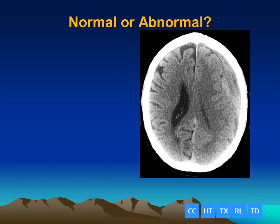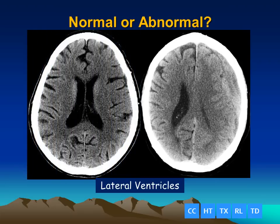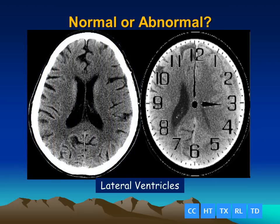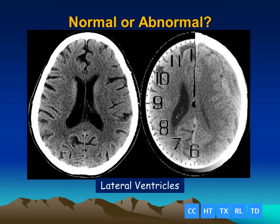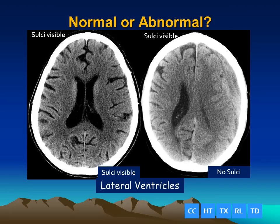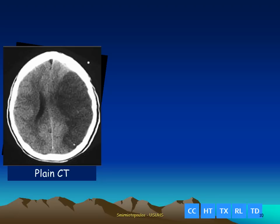How about this case? This is also at the level of the lateral ventricles. If we compare it to the normal side, we can see sulci all the way around on the normal patient. But on the abnormal patient, if you follow the clock face, we have an absence of sulci overlying the patient's left hemisphere. The sulci are invisible and compressed underneath this isodense extraaxial blood clot — an isodense subacute subdural hematoma.